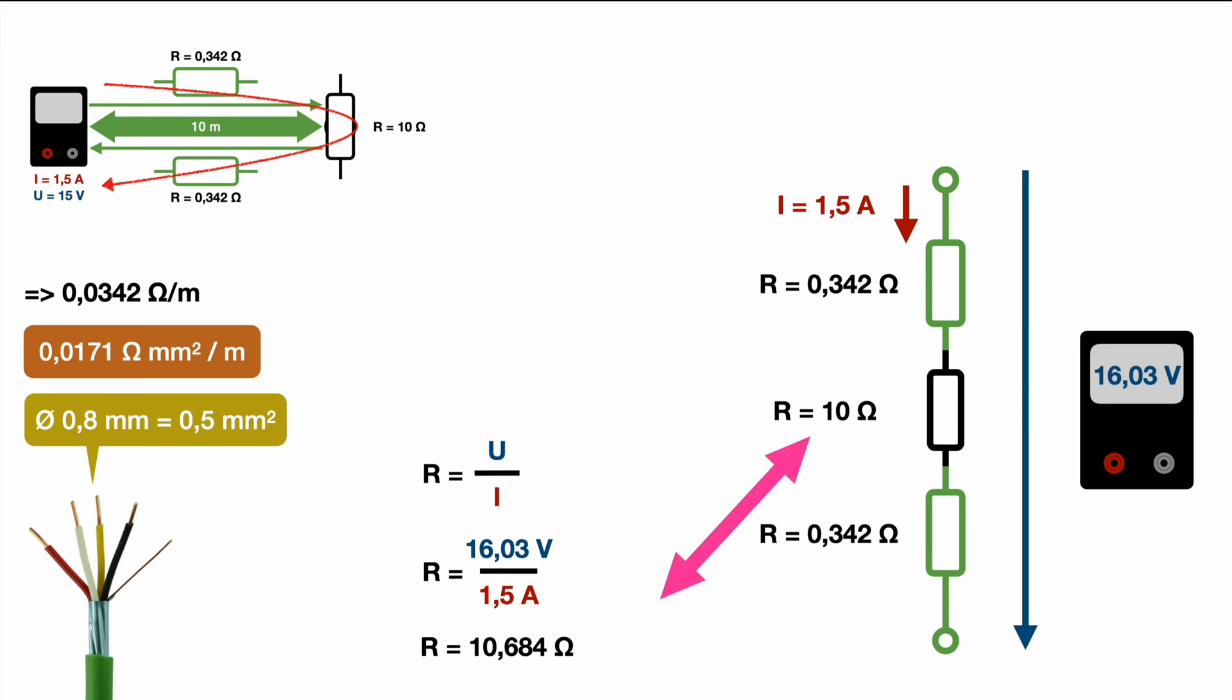Once we compare this to the actual value of the resistor we are basically trying to measure we can see a difference of 0.684 ohm which translates to a mistake of 6.84%. And of course you can see from this picture already if the resistor we try to measure is smaller this mistake would be much bigger. If the resistor we try to measure would be bigger this mistake wouldn't be so significant.